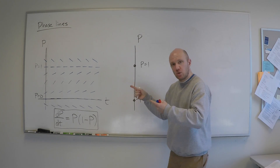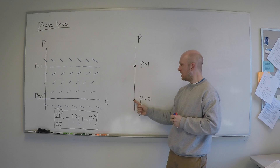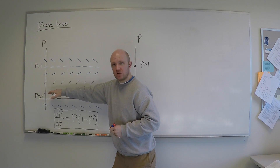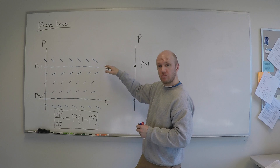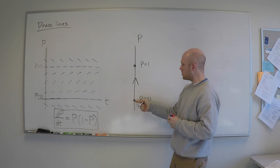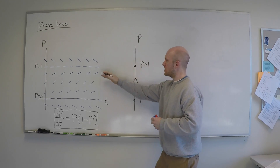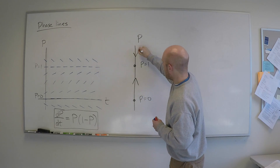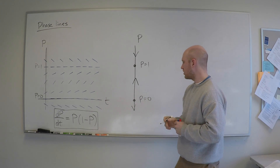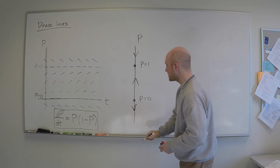Those are two equilibrium values — if I start at that value, I stay at that value. In between p equals 0 and 1, the solutions will be growing, so I'll make a little arrow pointing up. If I start out between 0 and 1, I will go up toward 1. If I start out above 1, I will go down toward 1. If I start out below 0, I will go down toward minus infinity. We have drawn our phase line.